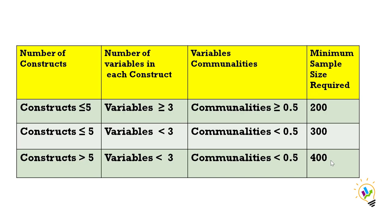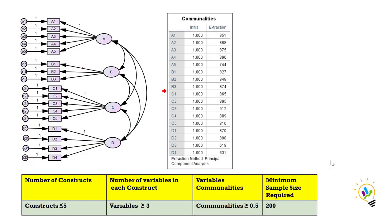Let us see one small example and discuss this. In this model, we have four constructs: A, B, C, and D. For construct A, we have five variables. For construct B, three variables. For construct C, five variables. And for construct D, four variables.